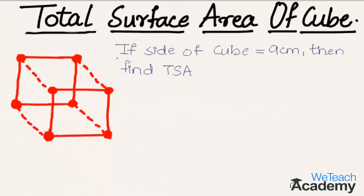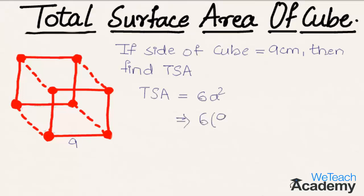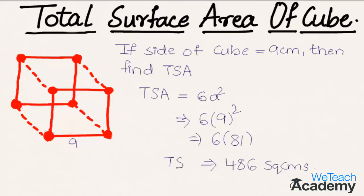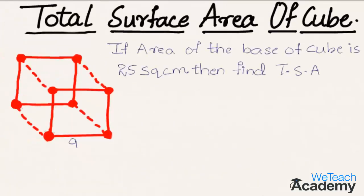Now let's work through an example using this formula. If the side of a cube is 9 centimeters, find the total surface area. We know the formula is 6a². Substituting a = 9, we get 6 × 9² = 6 × 81 = 486 square centimeters as the total surface area of the cube.